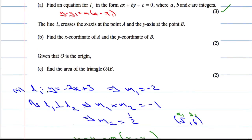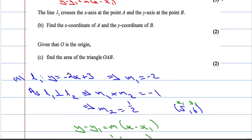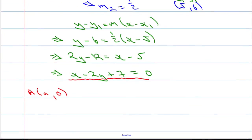Part B. The x-coordinate of A. A is going to be some point (a, 0). Because it's telling us that it's crossing the x-axis at the point A, that means that y is equal to 0. And where it crosses the y-axis at the point B, that's the x-intercept. That's where x is equal to 0.